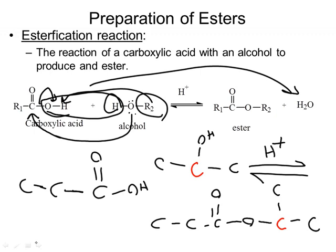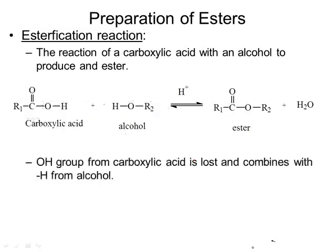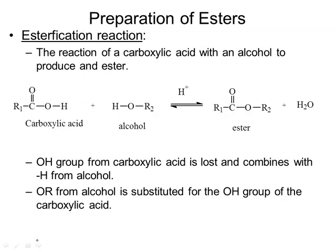So this is what the alcohol was, and this is what the carboxylic acid was. The OH group from the carboxylic acid was lost, and it combines with H from the alcohol.